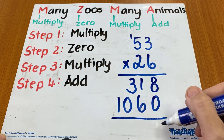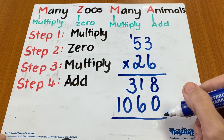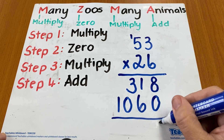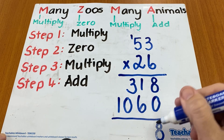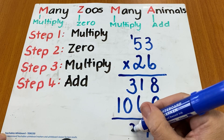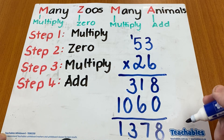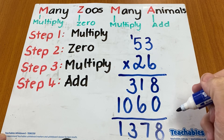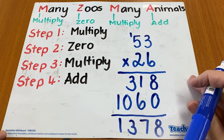Step four is to add both of the multiplications together. So eight plus zero is eight, one plus six is seven, three plus zero is three and I carry the one down. So 53 times 26 is 1378.